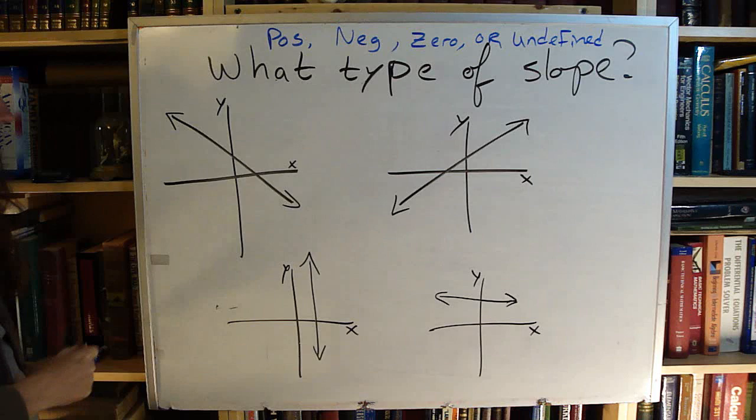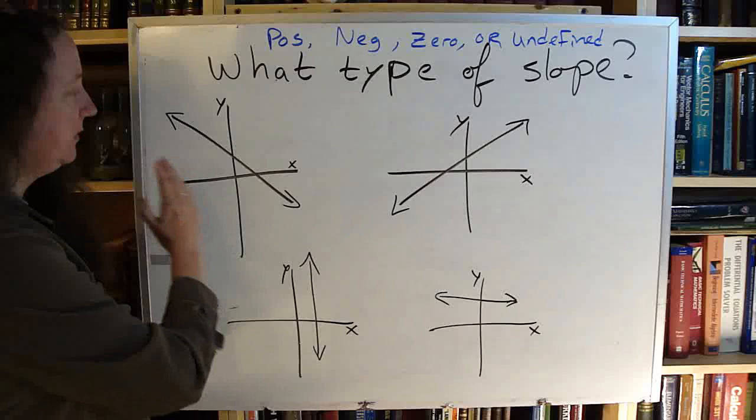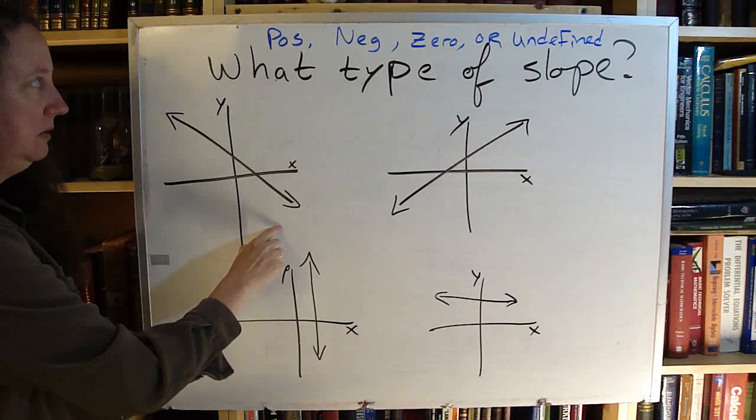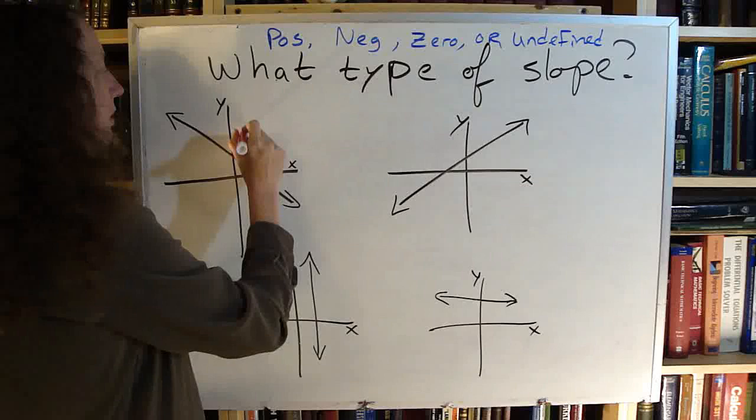As you go from left to right, just like you're reading English, you look at how the line goes. So as I'm going from left to right on this one, I see the line is going down. Down is negative. So this has a negative slope.